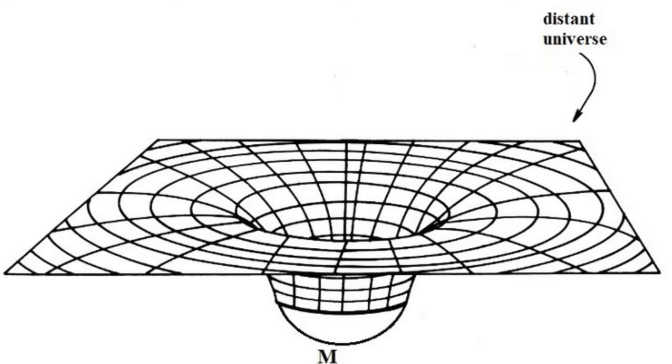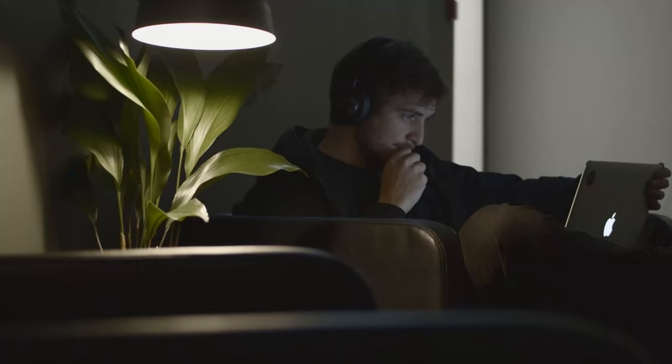To visualize this in 2D, imagine spacetime as a massive flat canvas. When an object is placed on this canvas, it creates a dent, attracting celestial objects based on the curvature generated by the primary object's mass. In reality, this visualization is a mere representation and doesn't accurately depict the curvature of time — only the curvature of space.